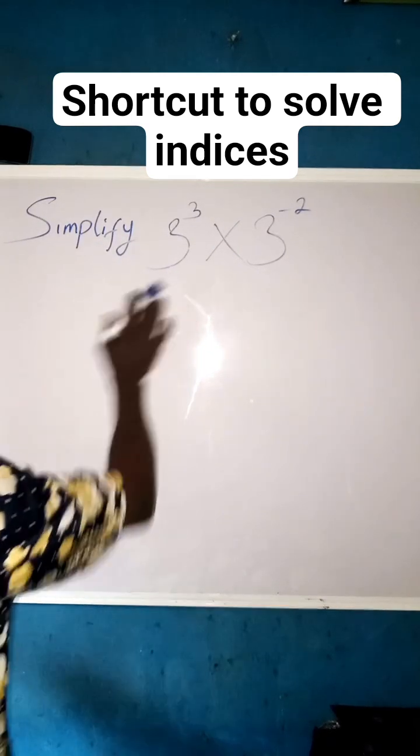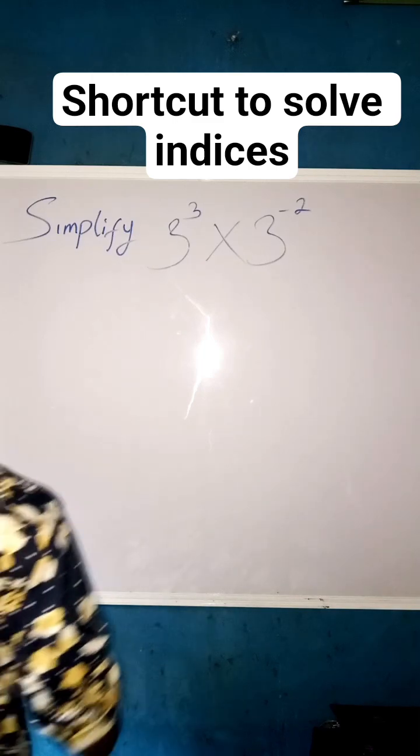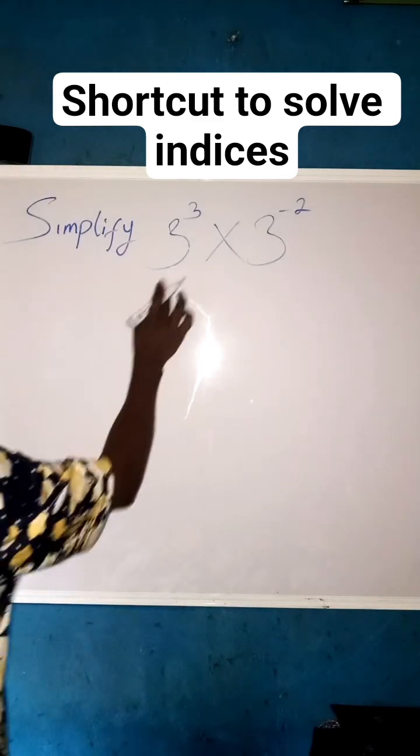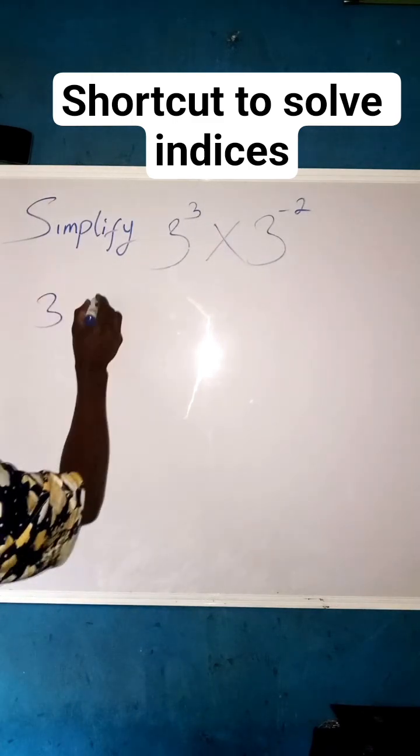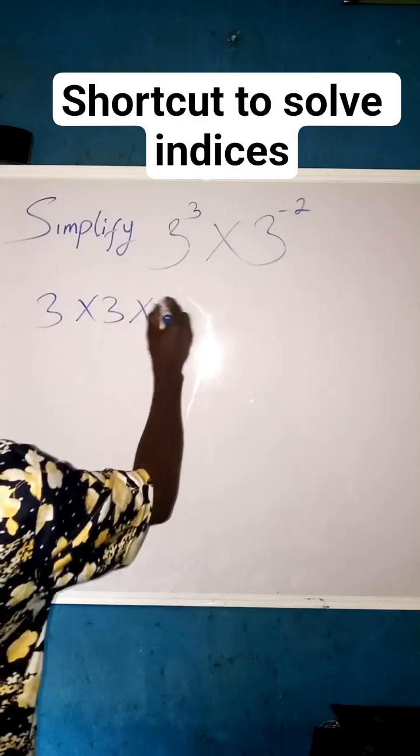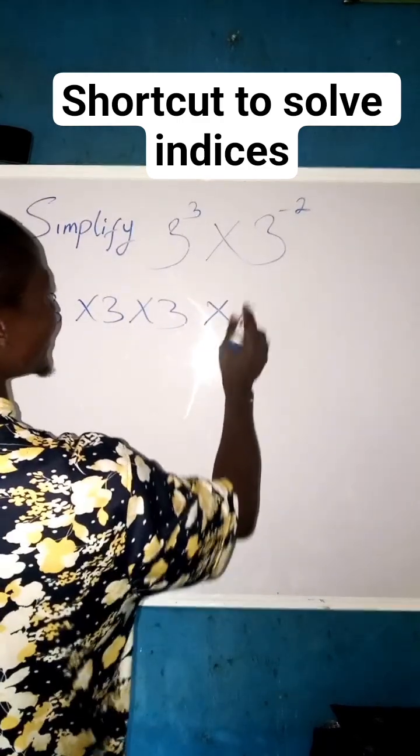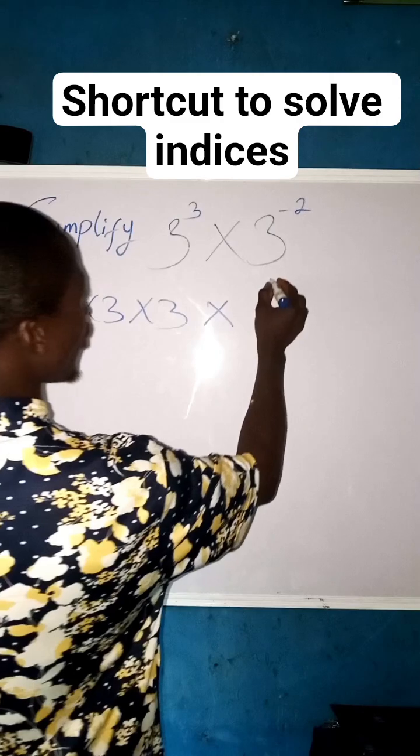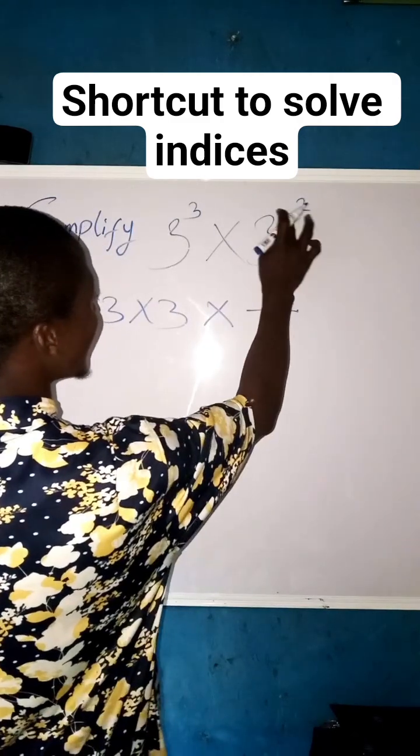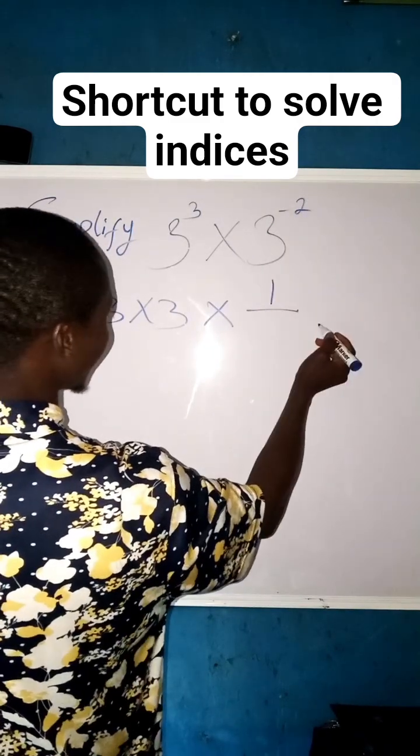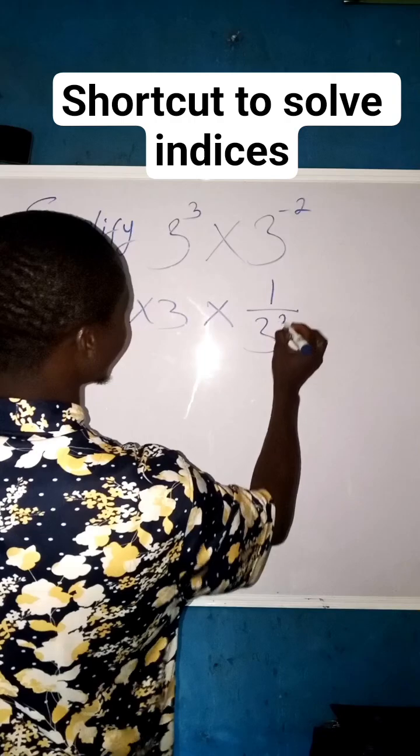Simplify. Let's simplify in the longer way. To get this solved, you see, 3 raised to the power 3 here means 3 times 3 times 3. Then times 3 raised to the power minus 2 means 1 all over. This minus becomes 1 all over 3 raised to the power 2.